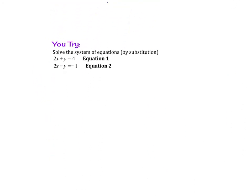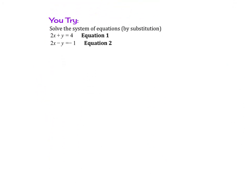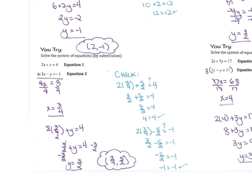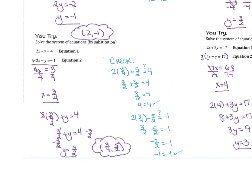Try this example: solve the system of equations by elimination, not substitution. If you tried this, you would have gotten fractions: x equals 3 fourths and y equals 5 halves. You could plug those back in to check and verify that it is true.